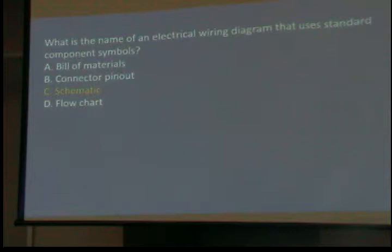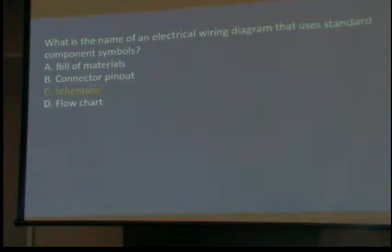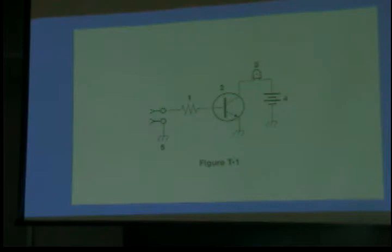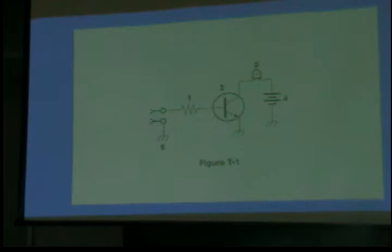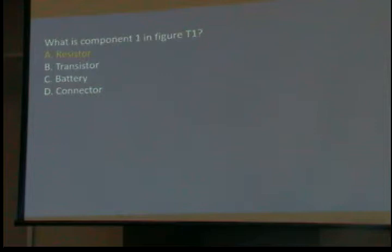It's called a schematic. It shows how things are connected — not how they're laid out on the board, not what they look like physically. What is component one in figure T1? The resistor. If you were an electron trying to get from one side to the other, wouldn't that slow you down? Component T1 is a resistor — it's going to slow you down if you had to take that path. It resists or impedes your progress.